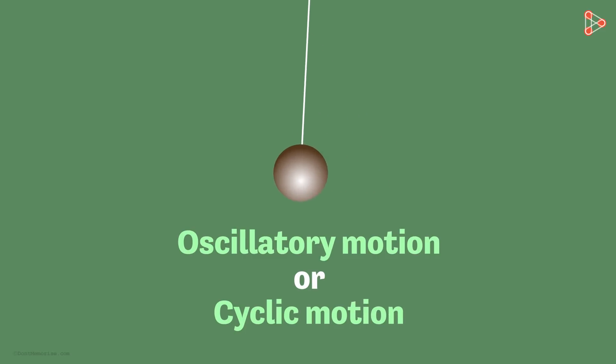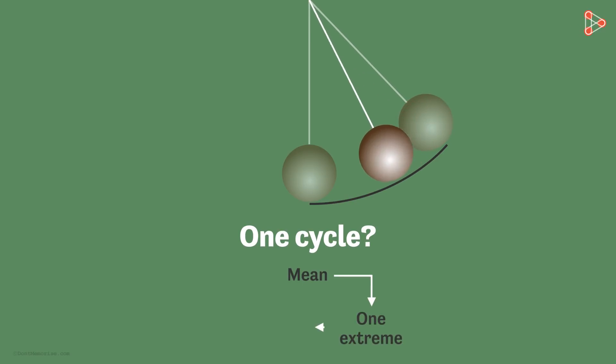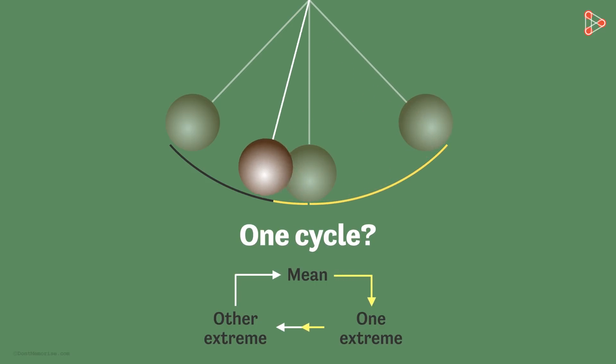Okay, so when does it complete one cycle? We say that the bob has covered one cycle or one oscillation when it moves from the mean to one extreme point, then to the other extreme and back to the mean. Let me repeat. From the mean to the extreme, to the opposite extreme and then back to the mean is one oscillation.